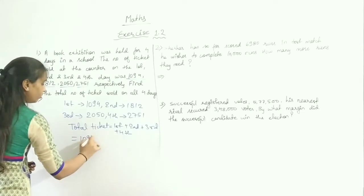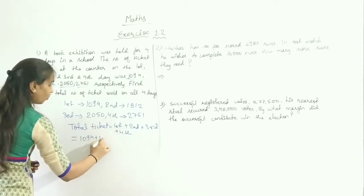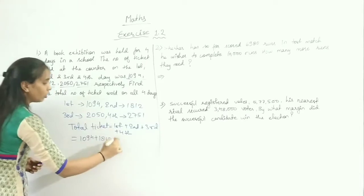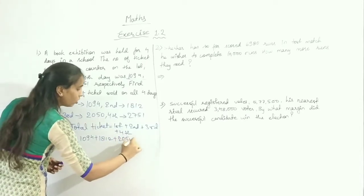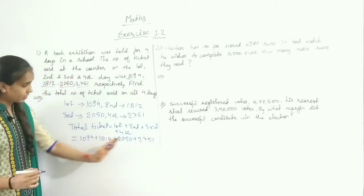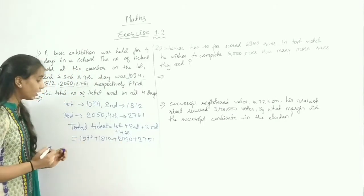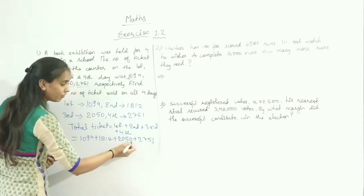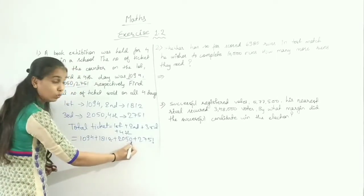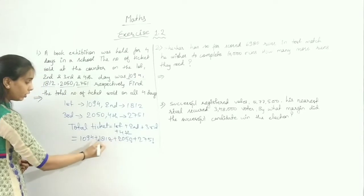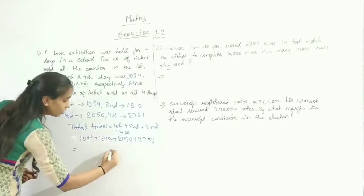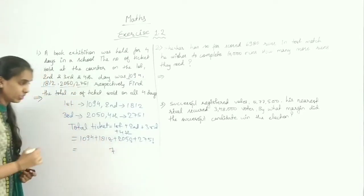So, 1094 plus 1812 plus 2050 plus 2751. First of all, we have to add all the ones digits: 1 plus 0 is 1, plus 2 is 3, plus 4 is 7. So the ones digit is 7.